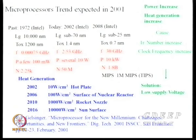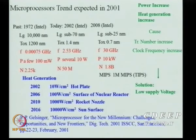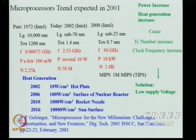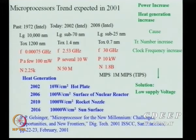High-K dielectrics became necessary because SiO₂ scaling reached physical limits. It was predicted as early as 2001 that microprocessors would reach 30 GHz with 25 nm gate lengths and 70 Ångström oxide — aiming for Tera instructions per second. However, the resulting power density became a critical problem.